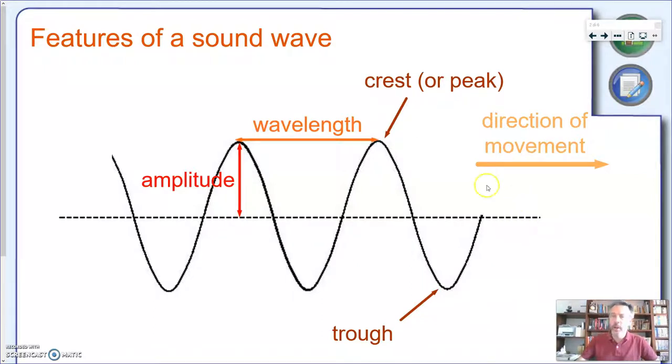Let's identify some of the parts. First of all, the top of a wave is called the crest or peak. So this is the top or one crest. This is another crest. The very bottom of a wave is called the trough. And you have one here, you have another one here, another one here.